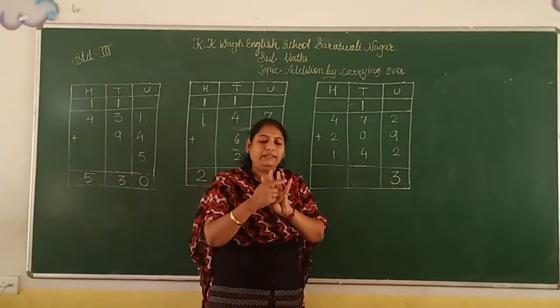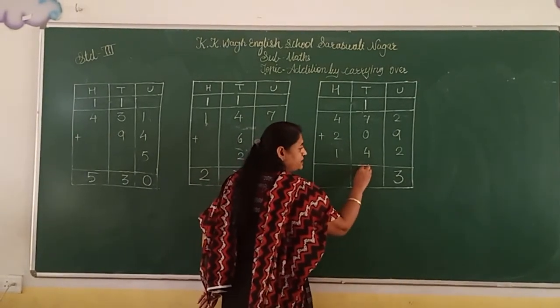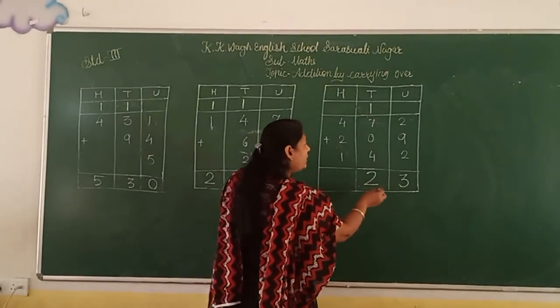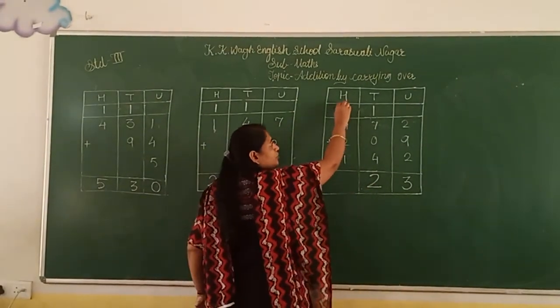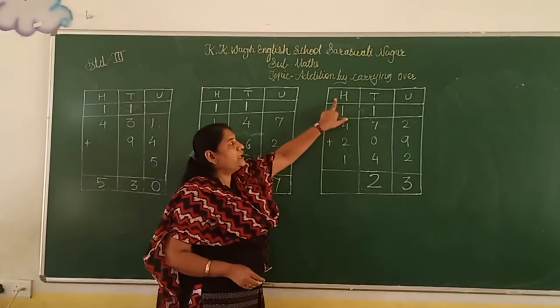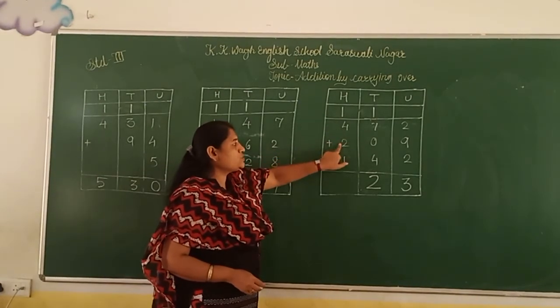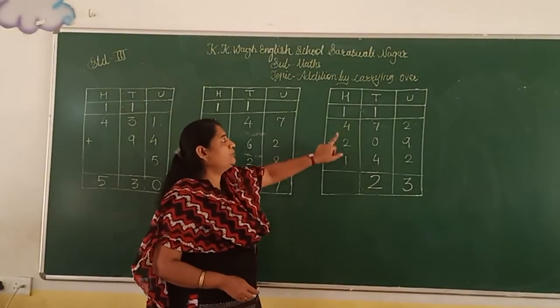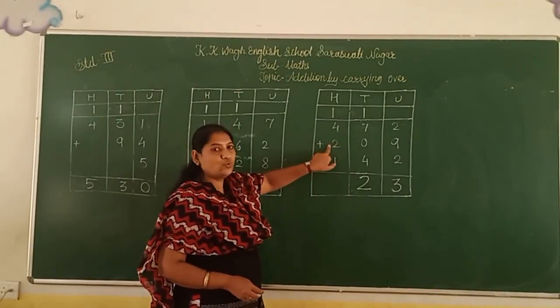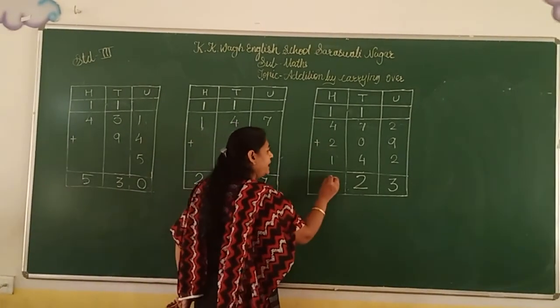...equals 12. So 12 tens means we keep the 2 in 10th place and 1 keep in mind and put in the 100th box. In 100th box, 1 plus 4 plus 2 plus 1 means 1 plus 4 is 5. 5 plus 2 means 7 and 7 plus 1 is 8.